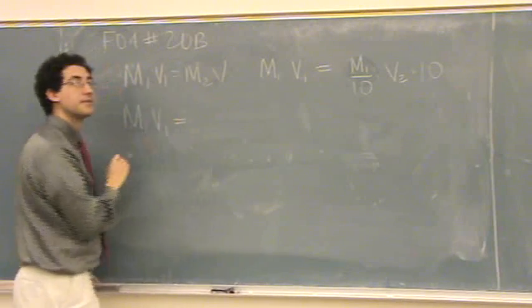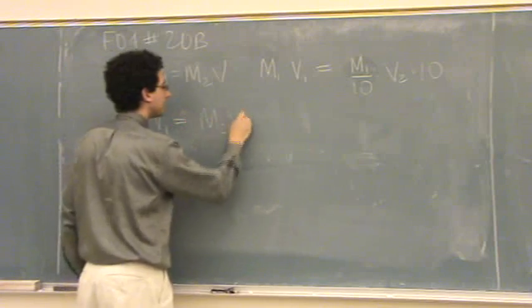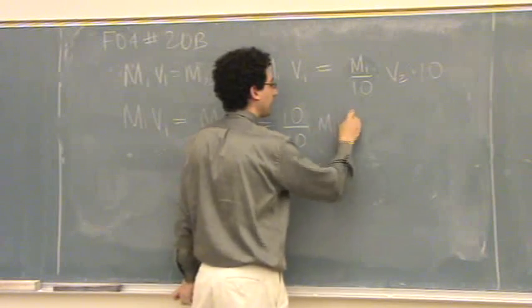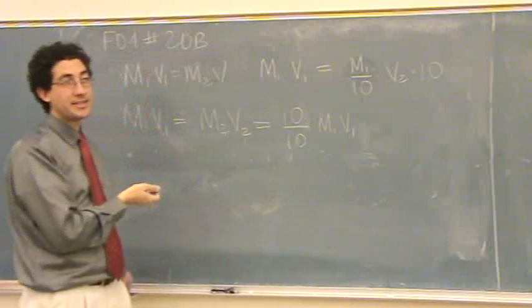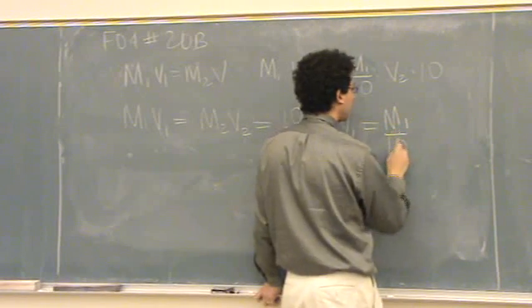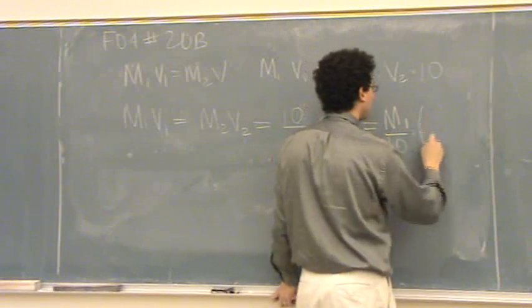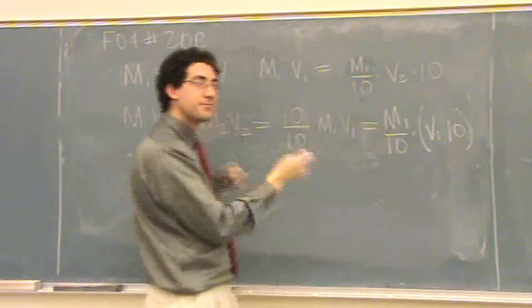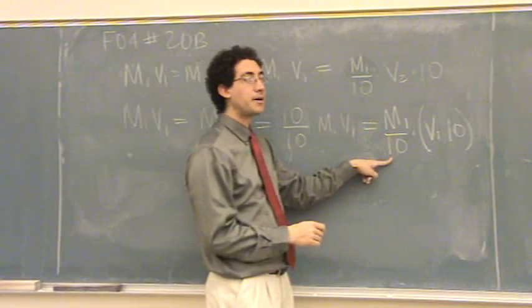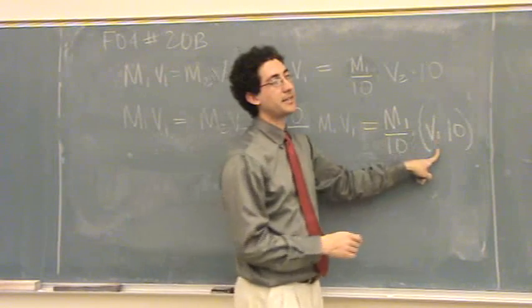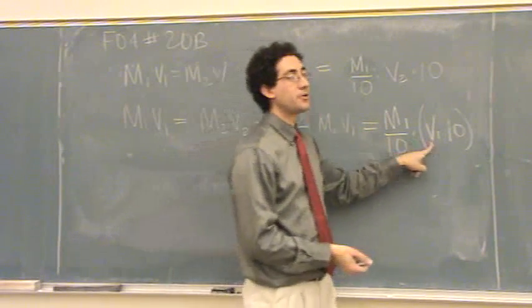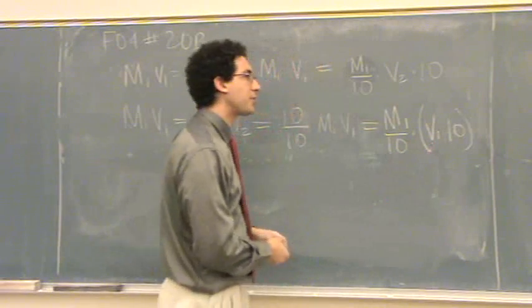Let me write it this way. So M1V1 equals M2V2. What if I said 10 over 10 times M1V1? I can do that, right? I can multiply by 10 over 10. That's just 1. Well, let me move that 10 over 10 around. M1 over 10 times V1 times 10. I just shuffled it around. What this is essentially saying, if you decrease something by one-tenth, like the molarity by one-tenth, you have to multiply the volume by 10. If you had to decrease this by one-half, the volume will double.